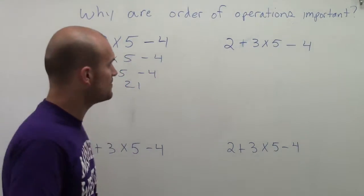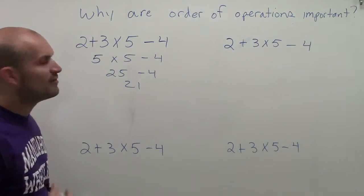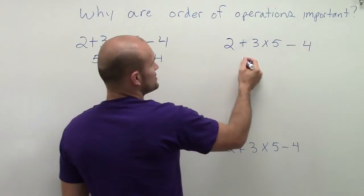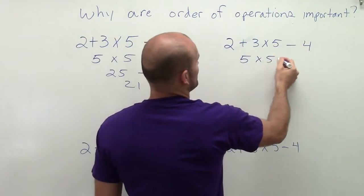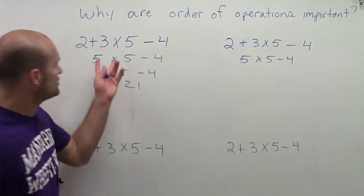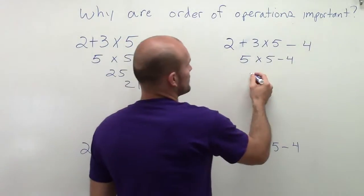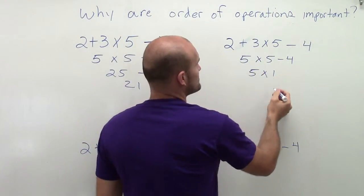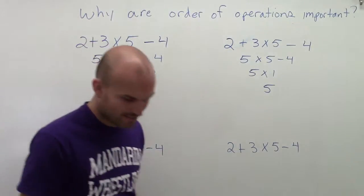Pretty fair enough, right? Well, what about if I wanted to do the same thing, but before I did that, I did 2 plus 3, which is 5. So then the next student does that. And then I get 5 times 5 minus 4. Well, rather than multiplying the 5 times 5, they want to subtract the 5 minus the 4. So they get 5 times 1, which equals 5. So now that student has a different answer.